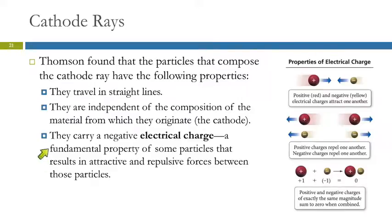And the cathode rays carry a negative electrical charge. That, in fact, is why they leave the negative cathode, and they travel towards the positive anode, because opposite electrical charges are attracted to each other.